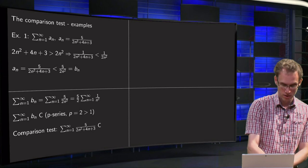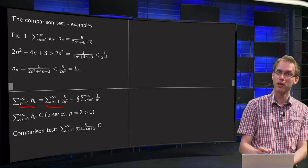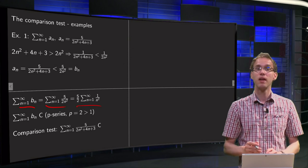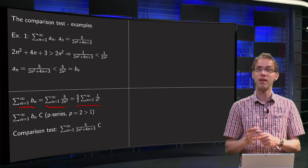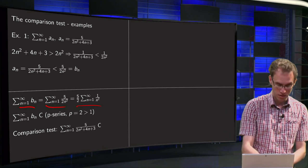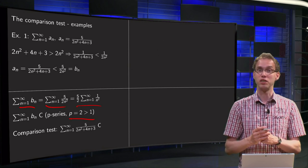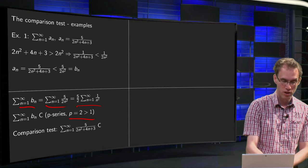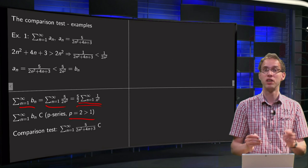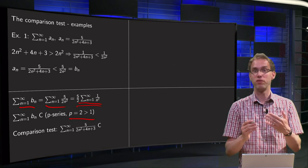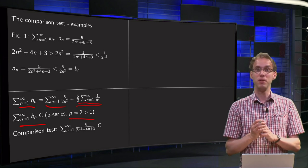Now take a look at our bn. Sum n equals 1 to infinity of bn equals sum n equals 1 to infinity of 5 over 2n squared. You can take the 5 over 2 to the front, and we are left with the sum n equals 1 to infinity of 1 over n squared. But we recognize that series. It is a p-series, this p equals 2, bigger than 1. And if your p in your p-series is bigger than 1, you know your series converges. So the sum n from 1 to infinity of 1 over n squared converges, and 5 over 2 times that converges as well.